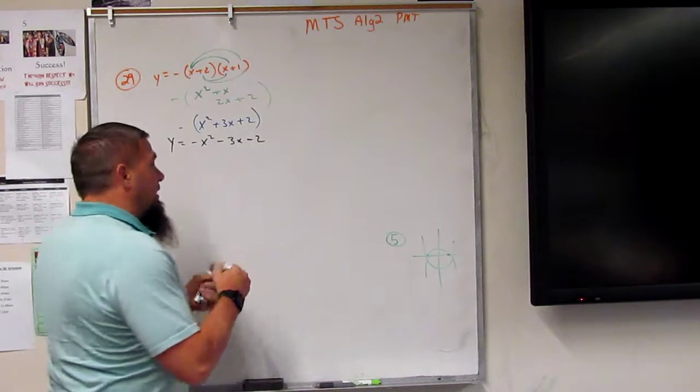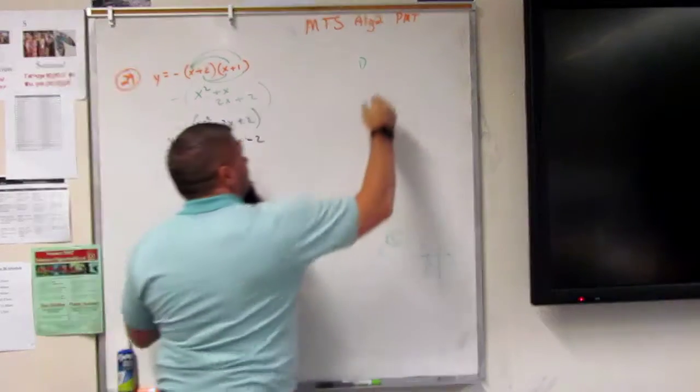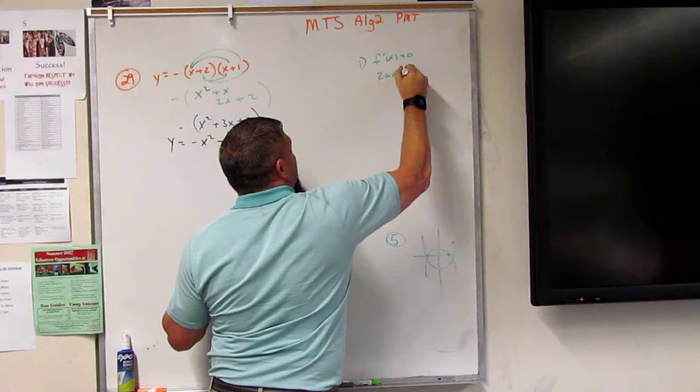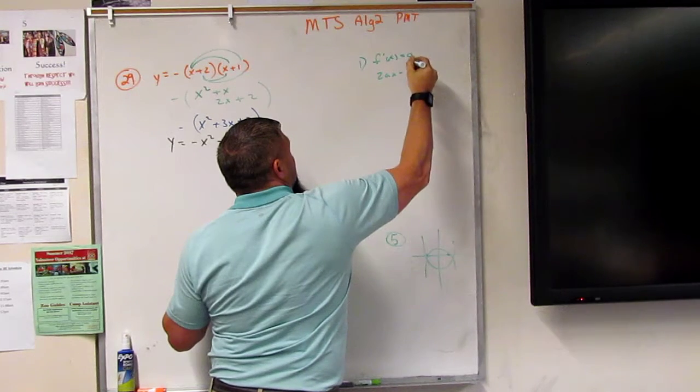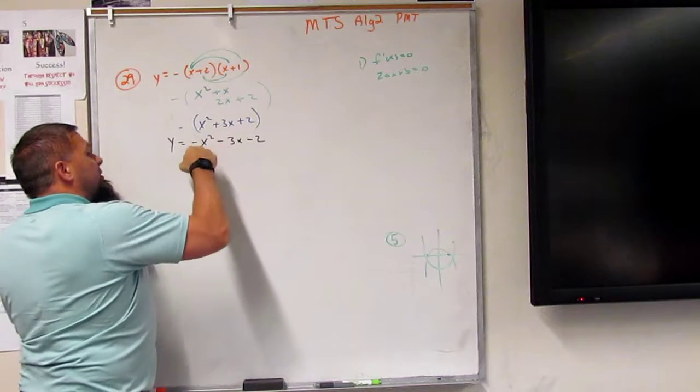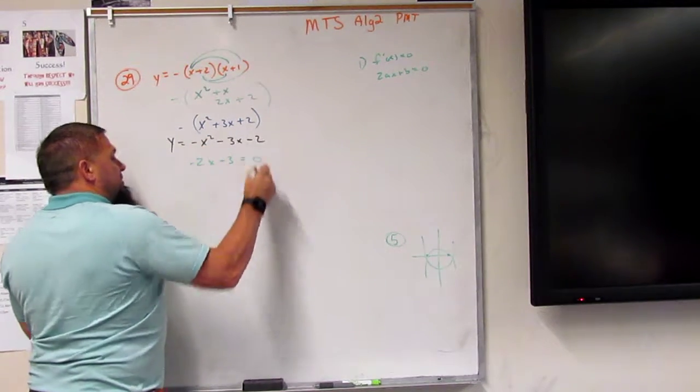All right, so first step first is that we want to find the derivative. f prime of x equals zero, or that 2ax plus b equals zero, right? So 2 times 1, that's negative 2x minus 3 equals zero, right?